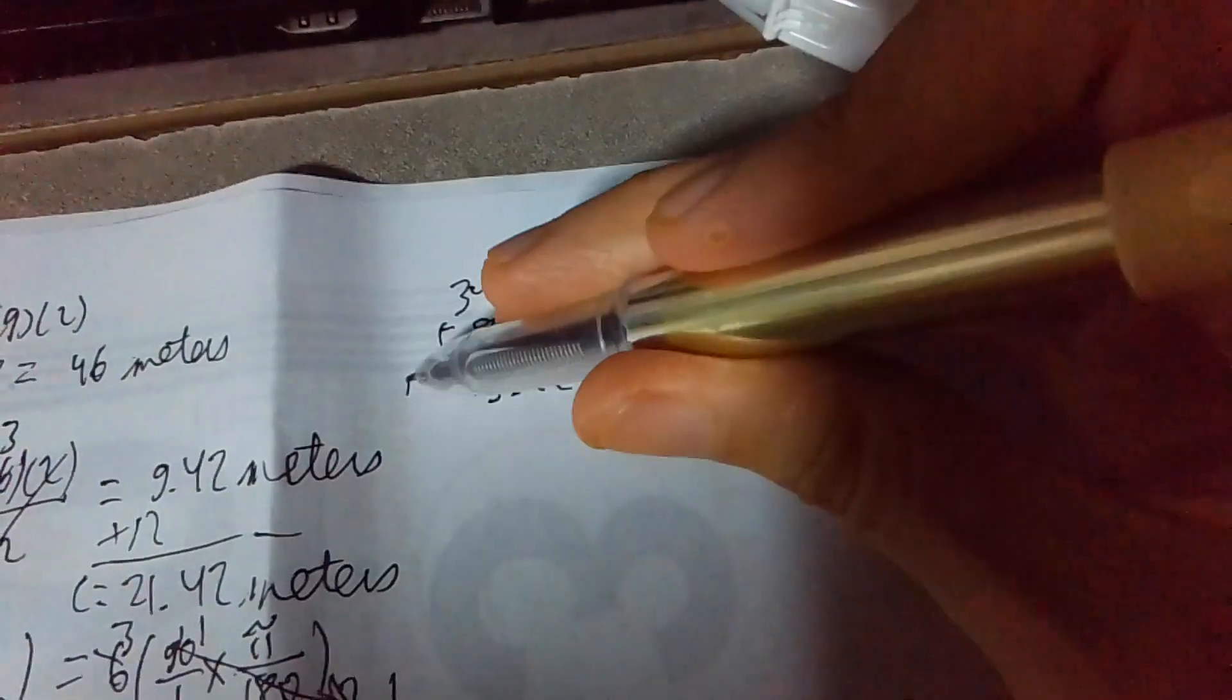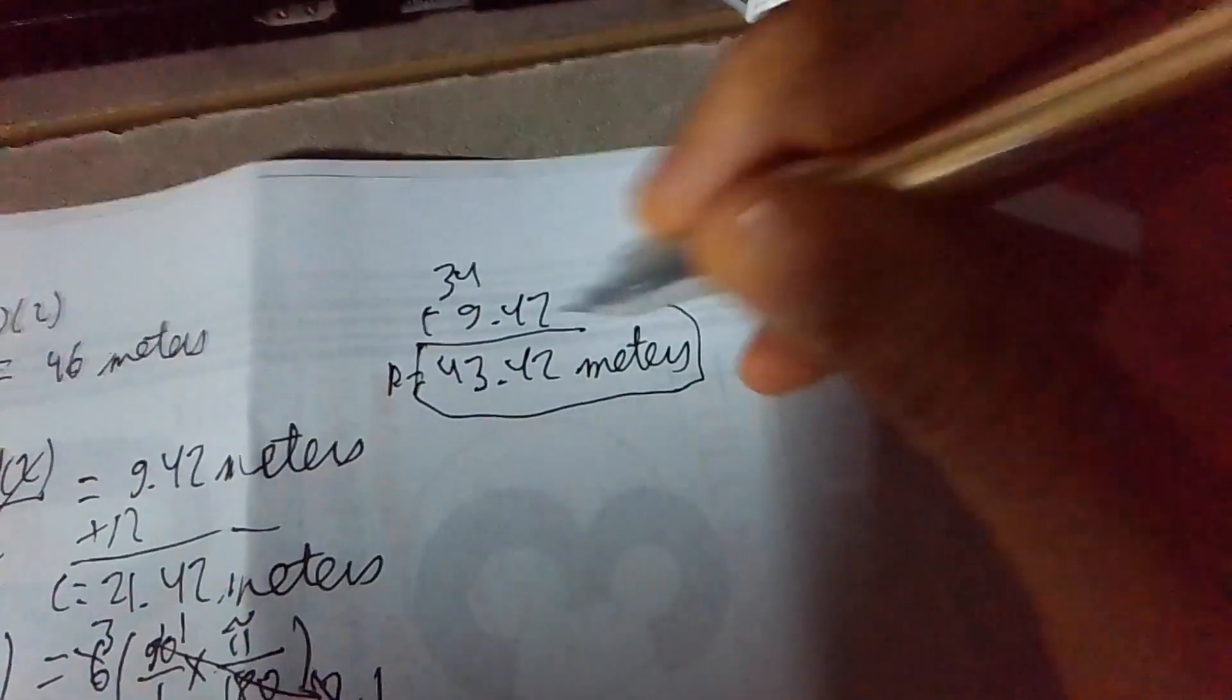For 34, we add with the 9.42 which we got earlier. And we should come up with 43.42 meters. That is the perimeter of the entire figure.